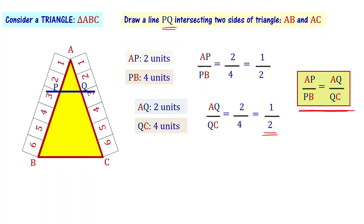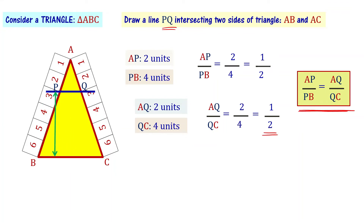Looking at the picture, PQ and BC are parallel lines. Parallel lines never intersect anywhere. Just like railway tracks, they are parallel and they can't intersect.